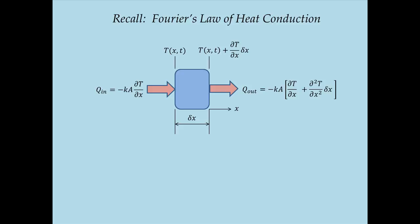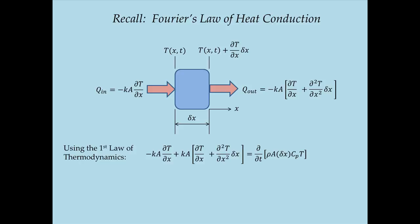Applying the first law of thermodynamics: heat in minus heat out equals the rate of change of internal energy stored in the slice. Heat in is negative kA (∂T/∂x). Subtracting heat out gives plus kA times (∂T/∂x + ∂²T/∂x² · delta x). That equals the rate of change of heat stored: density times area times thickness times Cp times temperature. The kA(∂T/∂x) terms cancel on both sides.